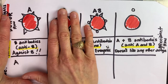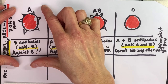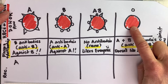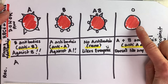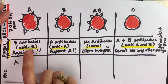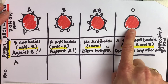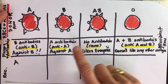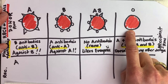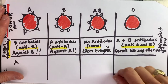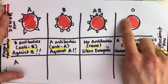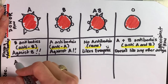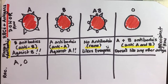Could this Type A person receive a Type O red blood cell? Some of you might answer no, but think about it — is there anything on O that the plasma doesn't like? O doesn't have any antigens on it at all. This person only dislikes B's, and there are no B's on O, so O is fine. There's nothing on O that's offensive to this person.